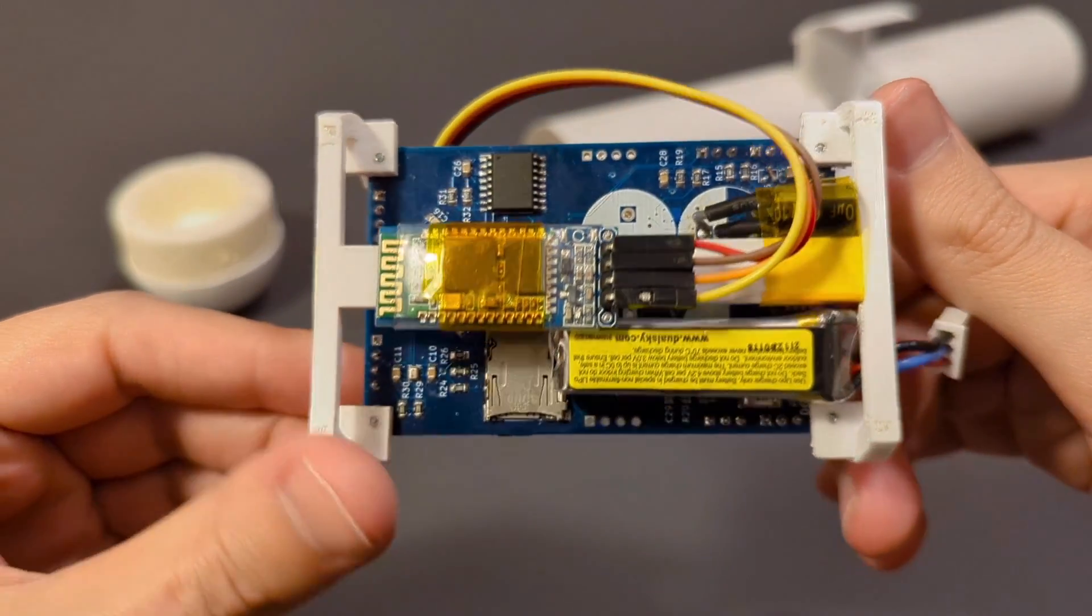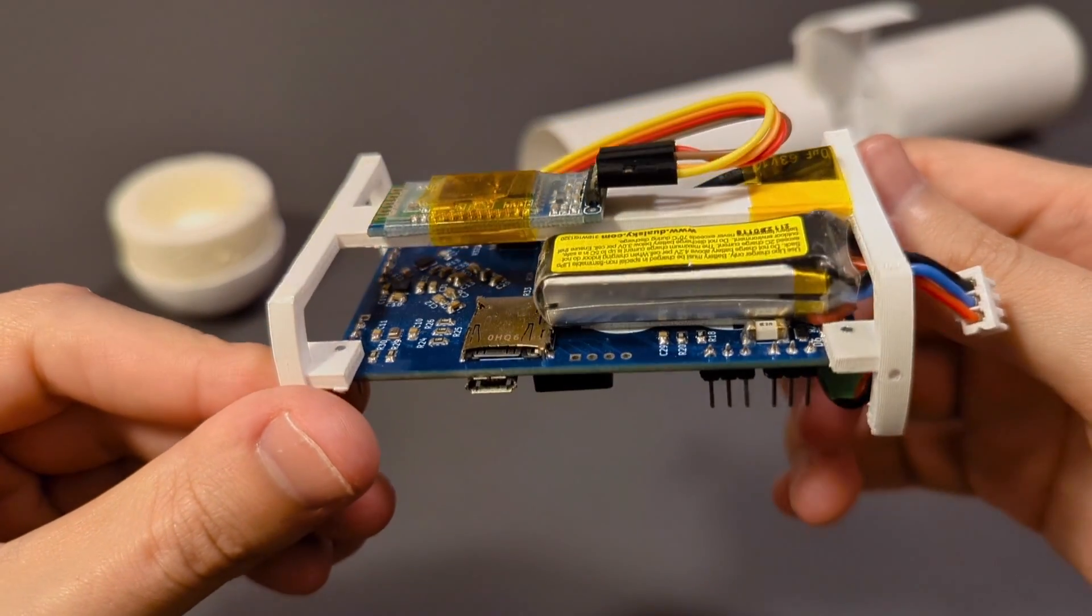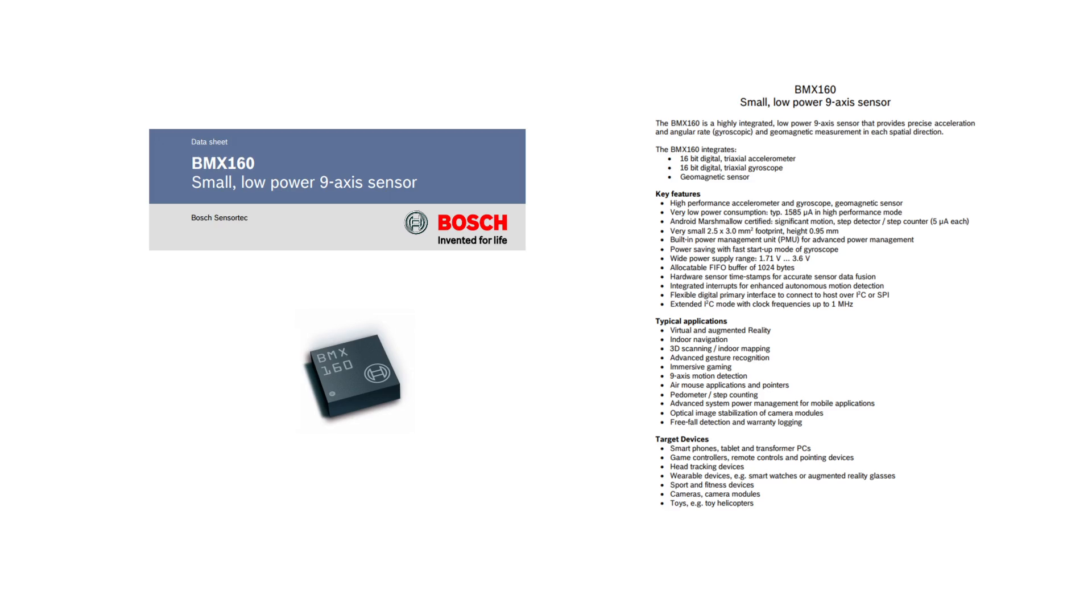To maintain stable flight, the rocket should know its orientation. So there is a 9-axis inertial measurement unit on the board that combines an accelerometer, gyroscope, and geomagnetic sensor in one tiny package. But frankly, I ended up relying only on gyroscope measurements for attitude estimations, as it was simple and gave more than enough precision during flight.